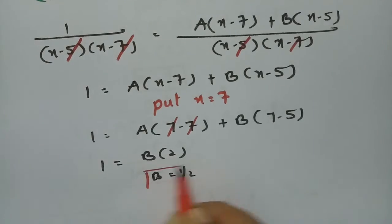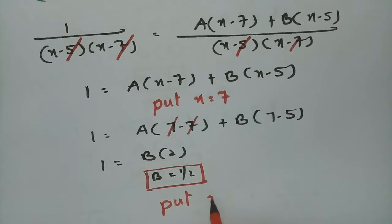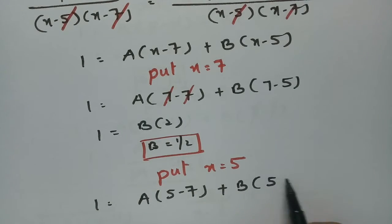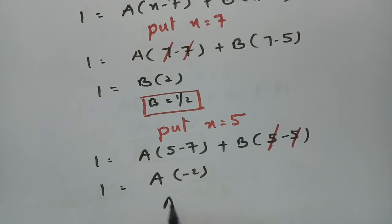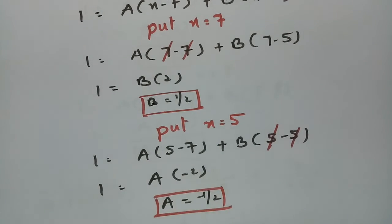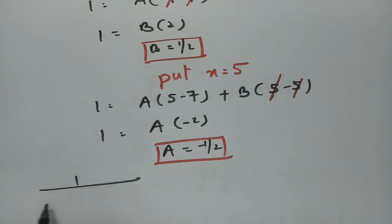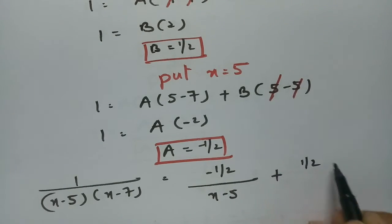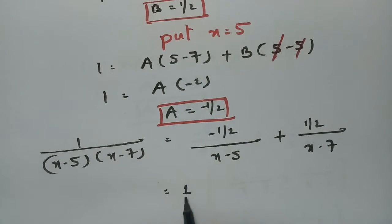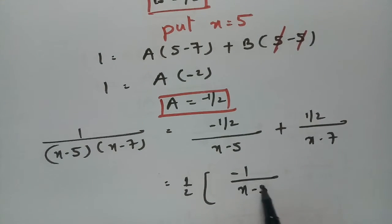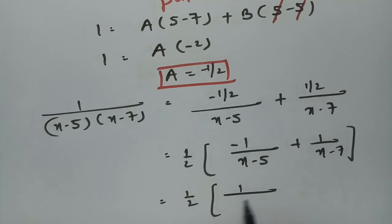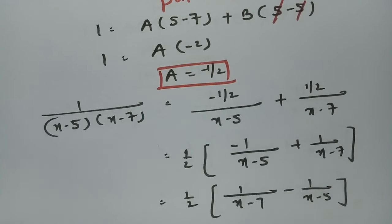Now to find A, I make the B term zero. Put x equal to 5: 1 = A(5 minus 7) + B(5 minus 5). The B term becomes zero, so 1 = A times (minus 2). Therefore, A = minus 1/2. Substituting back: 1 by (x minus 5)(x minus 7) = (minus 1/2) by (x minus 5) + (1/2) by (x minus 7). Bringing the 1/2 down: this equals (1/2) times [1/(x minus 7) minus 1/(x minus 5)].